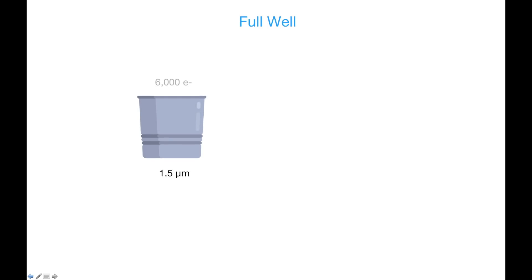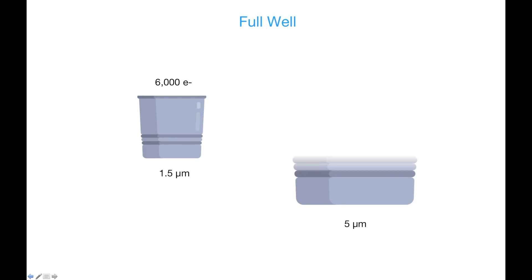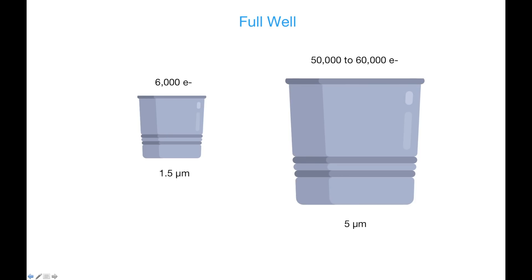The noise is proportional to the source follower's area. The full well also drops — there are only so many electrons you can pack into a given size photodiode. For example, a 1.5 micron pixel may have a full well of 6,000 electrons, whereas a 5 micron pixel for a DSLR may have a full well of 50 to 60,000 electrons.